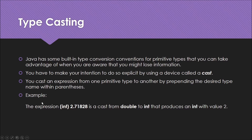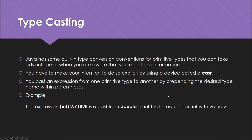An example of typecasting: the expression is 2.71828. I want to convert it into an integer, so I just write (int) in front of it. This value is cast from double to integer. It will not round it to 3 — it will truncate to 2, losing the floating point part, so you are left with the value 2.